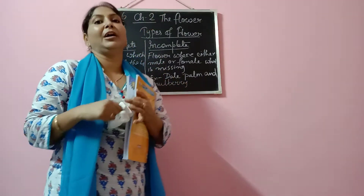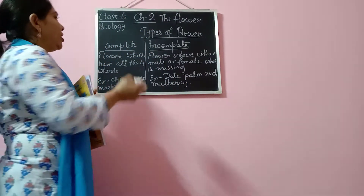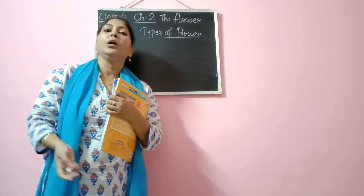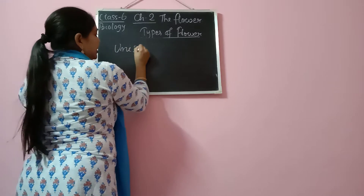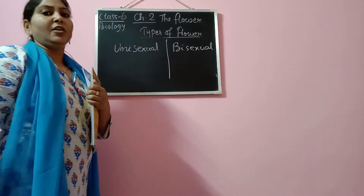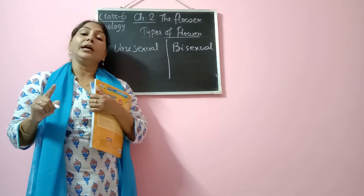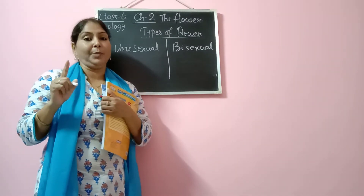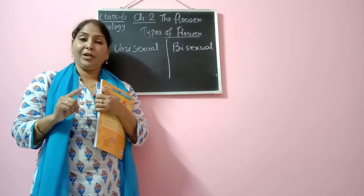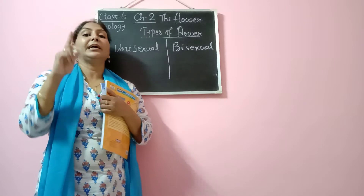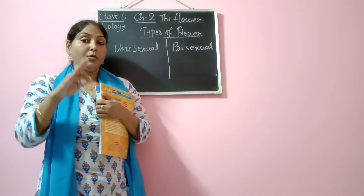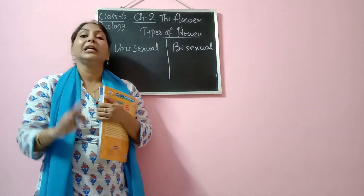Now we have another type of flower — unisexual and bisexual. What is the meaning of unisexual and bisexual? Uni means one, bi means two. Unisexual means a flower which has only one reproductive part — either it will have the male reproductive part or the female reproductive part. That type of flower is known as a unisexual flower. Bisexual means those flowers which have both male and female reproductive parts — they are known as bisexual flowers.